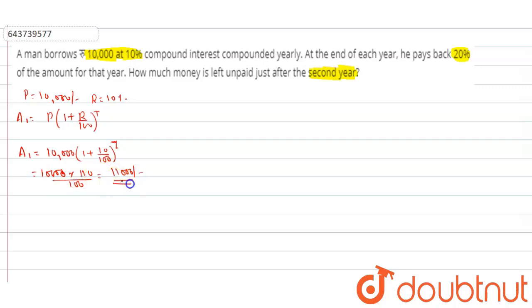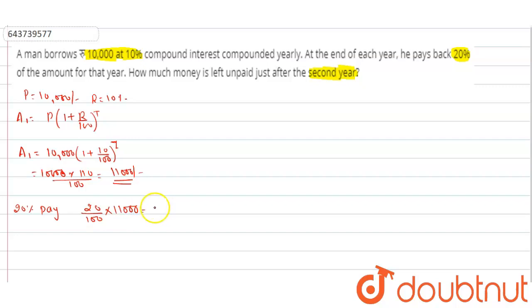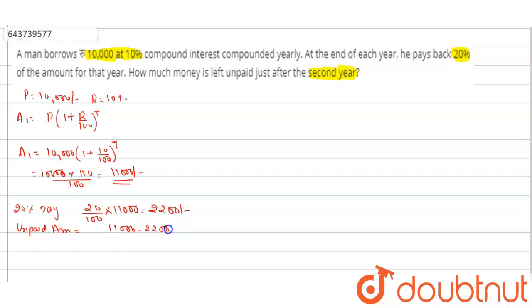20 percent is paid: 20/100 × 11,000 = 2,200 rupees. So the remaining unpaid amount is 11,000 − 2,200 = 8,800 rupees.